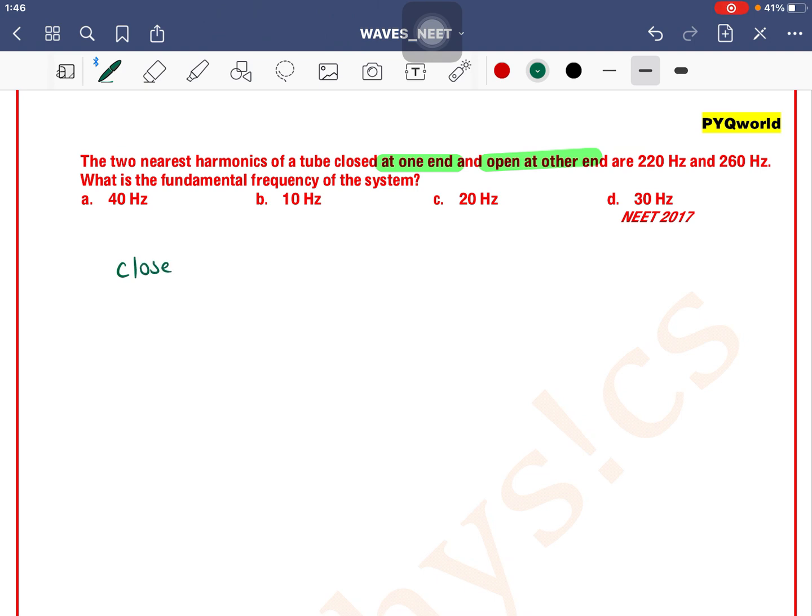For a closed pipe, we know that the frequency pattern is n₀, 3n₀, 5n₀, 7n₀, and so on. And what are the two nearest frequencies?